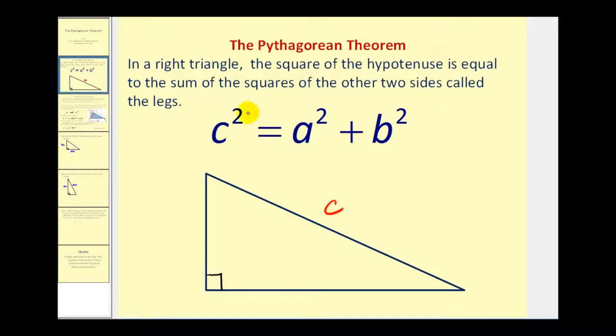The reason that's so important is notice that c is on one side of the equation by itself. The two legs are labeled a and b.